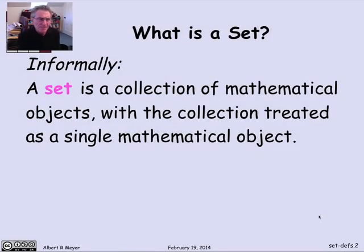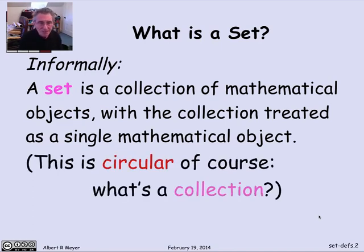So informally, a set is a collection of mathematical objects. And the idea is that you treat the collection of objects as one new object. That's a working definition, but it's circular because I haven't defined what a collection is, and a collection is no clearer or easier to define than a set. So let's try to work up the idea of sets by looking at some examples.